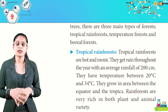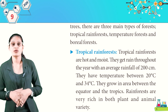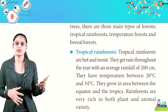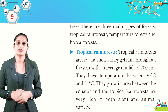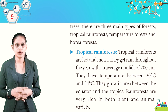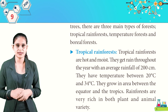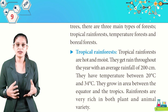Tropical rainforests are hot and moist. They receive rain throughout the year with an average rainfall of 200 cm, and have temperatures between 20°C and 34°C. They grow in areas between the equator and the tropics. Rainforests are very rich in both plant and animal variety.